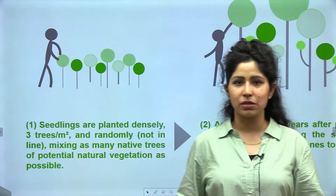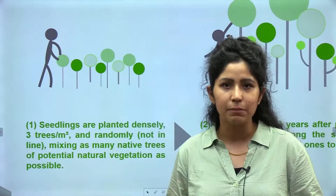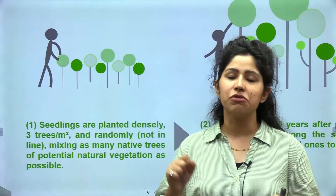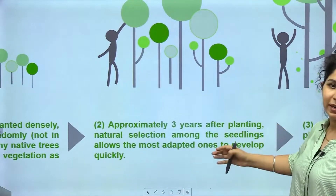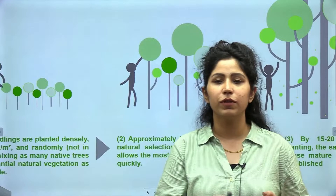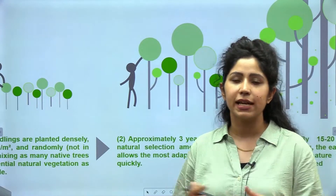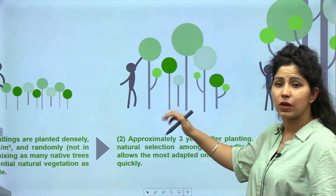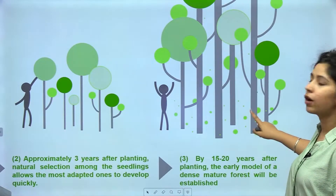For example, if done in Punjab, you plant mango trees, peepal trees — whatever trees are native to that area, because local vegetation-based tree plantation is beneficial for local people and local climate. Only local species can be beneficial to local climatic conditions. Approximately 3 years after plantation, these trees grow. Through natural selection, weak seedlings that cannot survive in the long run will die out, but since many seedlings were planted, the forest will still be quite dense.